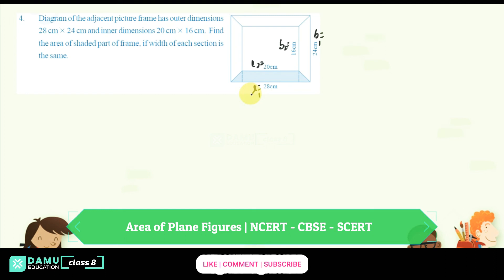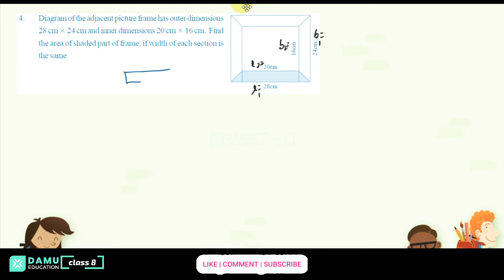Find the area of the shaded part of the frame if the width of each section is the same. The shaded region has outer total dimension 28 cm and inner dimension 20 cm. Drawing the inner dimensions inside gives us the frame shape.